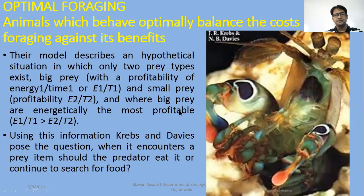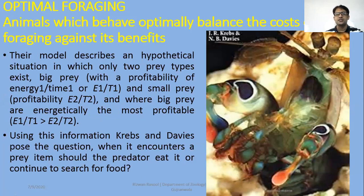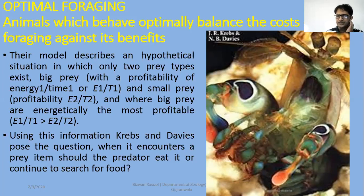Their model describes a hypothetical situation in which only two prey types exist: a big prey and a small size prey. With the big prey, the equation given is: energy E1 over time T1, and the profitability is E2 over T2. Here E refers to the energy and T refers to the time. The big prey's energy E1 for larger prey definitely needs to be more compared to E2 for smaller prey.